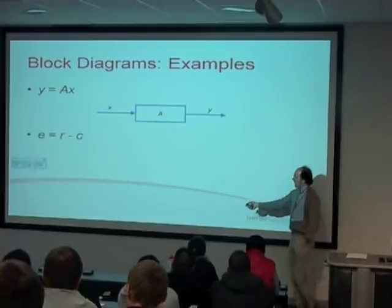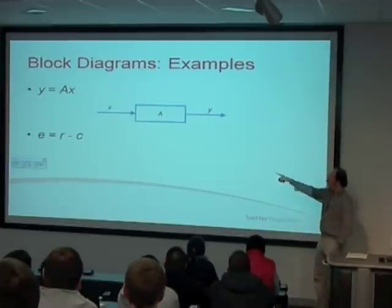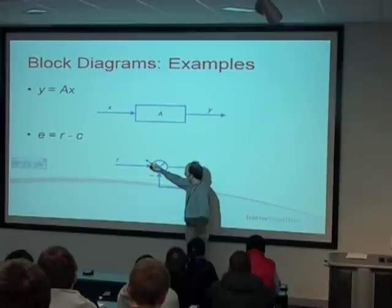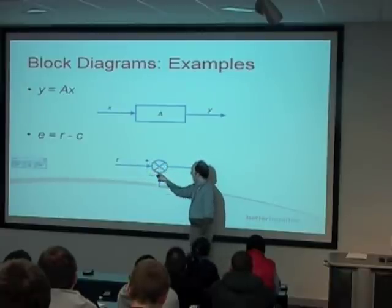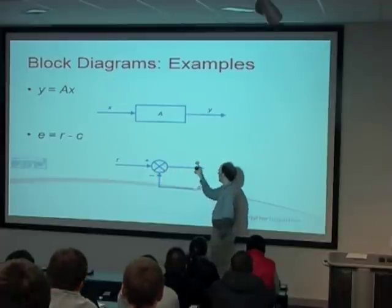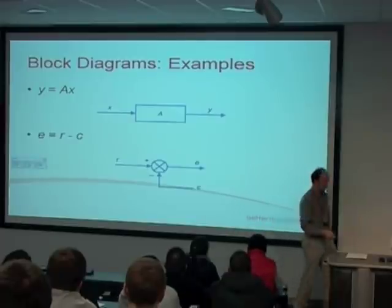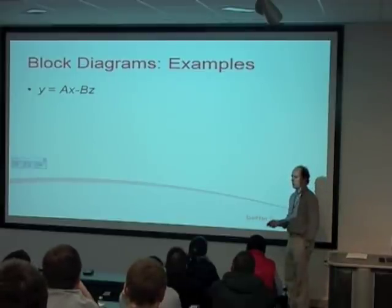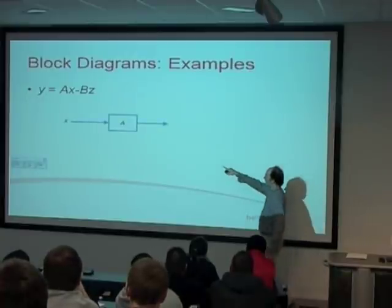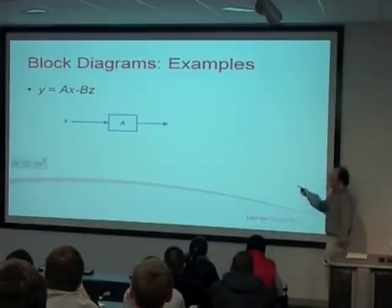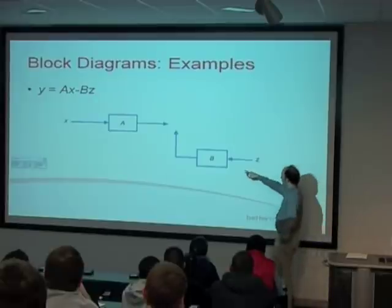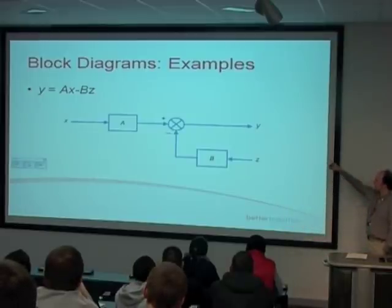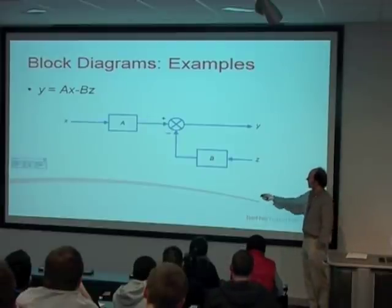Here we've got a summing or subtraction - if r goes in and you subtract c from it, you get the output of e. So r is positive, c is minus, and you get the operation at the summing junction, giving output e equals r minus c. Something a bit more complicated: y equals ax minus bz. You have a block called a with x as input giving ax. bz is the same thing - a block with b, z as input. We want a summing junction because we've got a minus sign, so ax minus bz equals y. That's how you represent that equation with a block diagram.